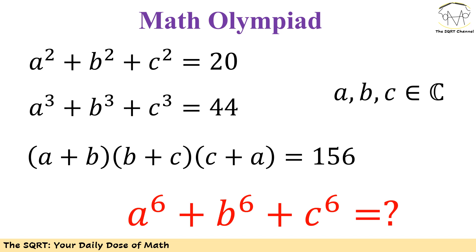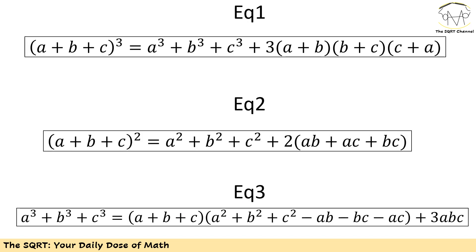Let's see how we are going to tackle this problem. Take a moment to see if you can find the answer. To simplify the explanation, I'll first introduce the identities I'm going to use. The first identity is (a plus b plus c) to the power of 3, which expands as a cubed plus b cubed plus c cubed plus 3 times (a plus b)(b plus c)(c plus a).